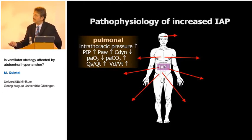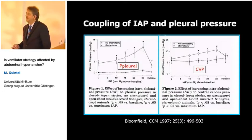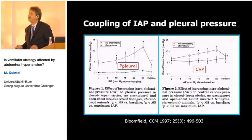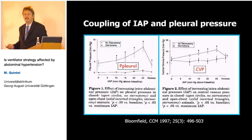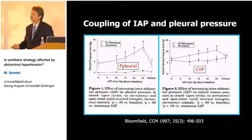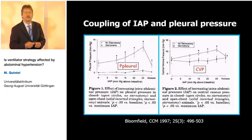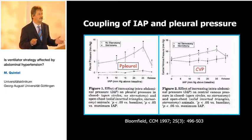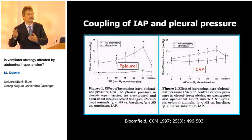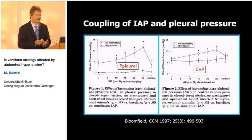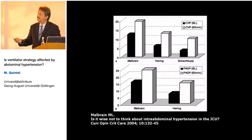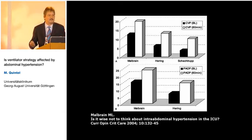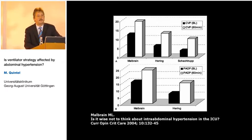An older study performed in pigs shows the increase of pleural pressure in animals with and without an open chest. If the chest is closed, as you increase intra-abdominal pressure, you get a marked increase in pleural pressure, consecutively followed by an increase in central venous pressure. First message: don't trust your central venous pressure if abdominal pressure is increased. This has also been shown for pulmonary capillary occlusion pressure (PCWP) by Malbrain and Herring — there is a marked change in PCWP when intra-abdominal pressure is increased. Don't trust the PCWP if your abdominal pressure is elevated.